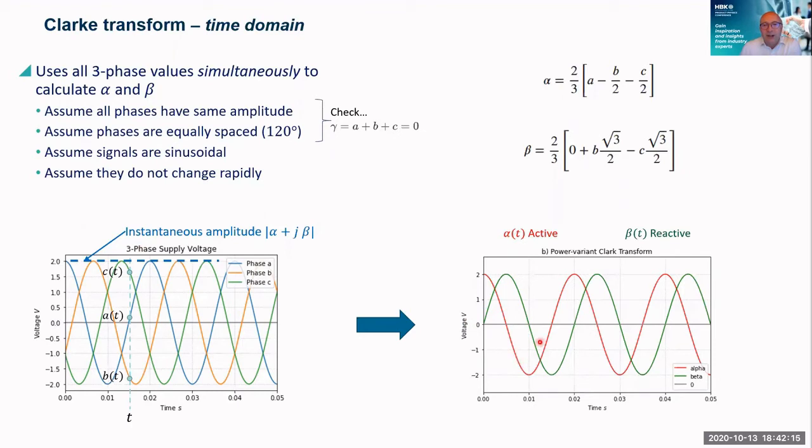So we can now plot alpha and beta through time. And of course, if I were to plot the modulus of those, what I'm actually plotting is the instantaneous amplitude. I don't have to wait until one of my points coincides with the maximum in order to work the amplitude. At any point in time, I can work out what that amplitude should be.